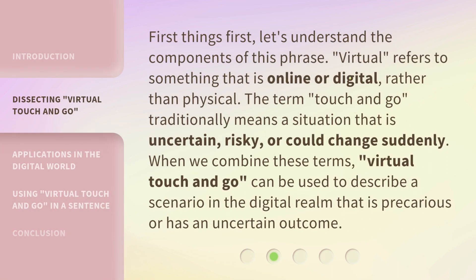First things first, let's understand the components of this phrase. Virtual refers to something that is online or digital, rather than physical. The term Touch and Go traditionally means a situation that is uncertain, risky, or could change suddenly. When we combine these terms, Virtual Touch and Go can be used to describe a scenario in the digital realm that is precarious or has an uncertain outcome.